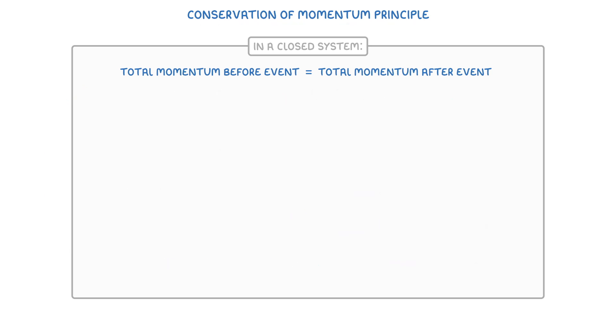Now in some circumstances, the momentum before an event might be zero, like it is for stationary objects which don't have any momentum because they're not moving. And so in these cases, the total momentum after the event must also be zero.